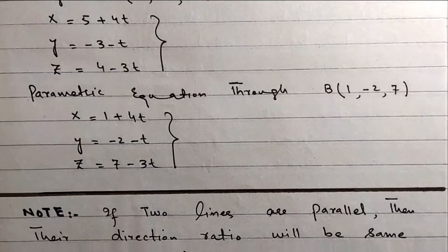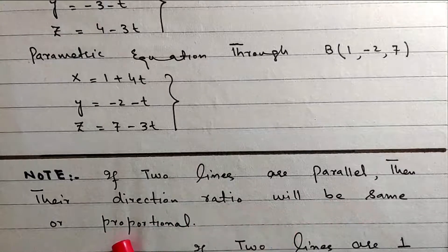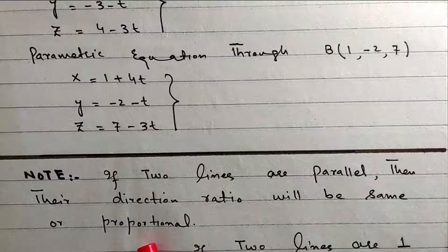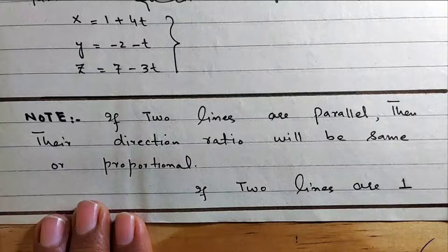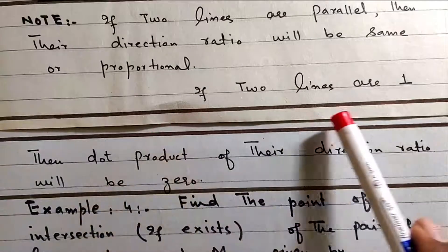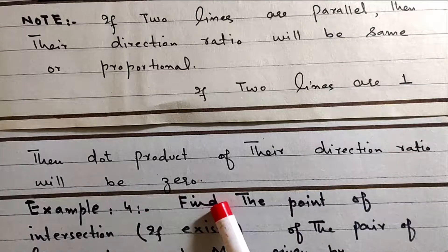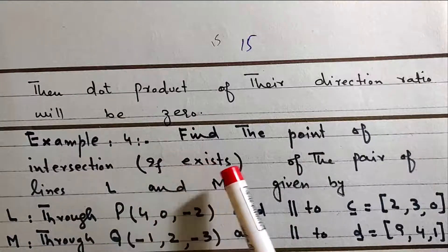Note: If two lines are parallel, then their direction ratios will be the same or proportional. Similarly, if direction ratios are the same or proportional, then the lines will be parallel. If two lines are perpendicular, then the dot product of their direction ratios will be zero.